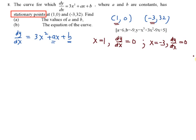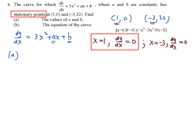This is very important because when you want to find the value of a and b, you must have two equations to substitute inside. First, you can make use of x equals 1 and dy/dx equals 0. So you have 0 equals 3 times 1 squared plus a times 1 plus b. So your first equation is: a plus b equals negative 3.